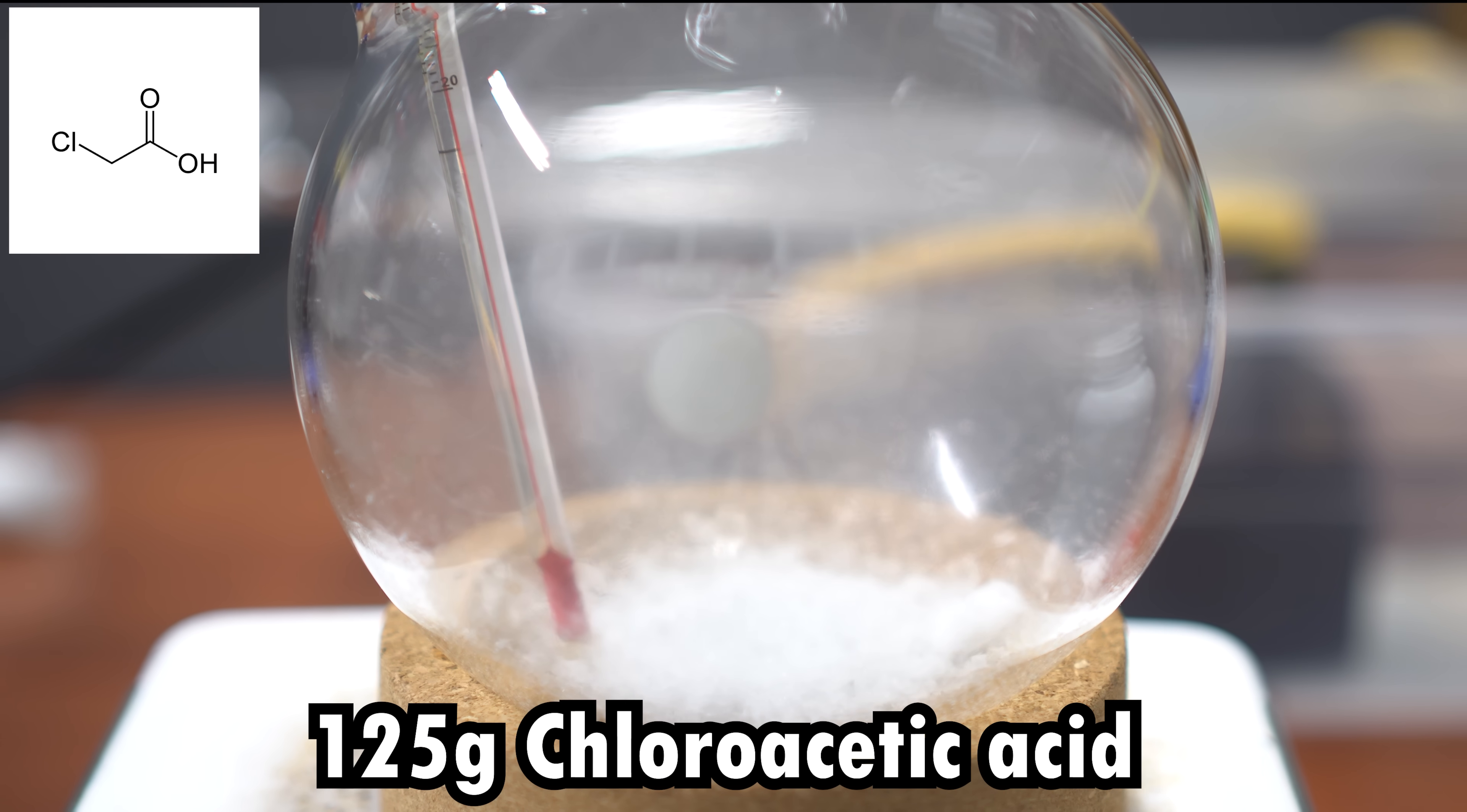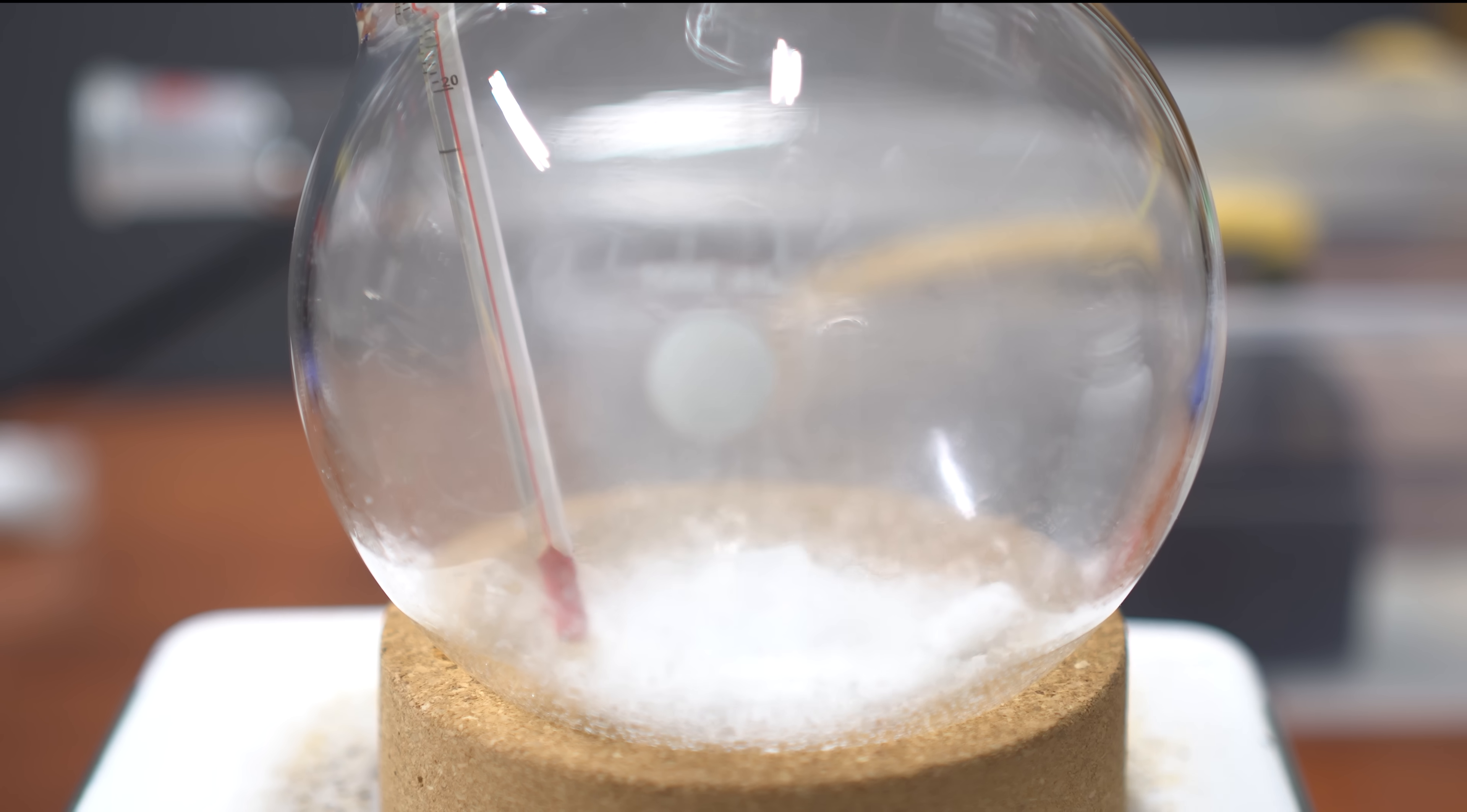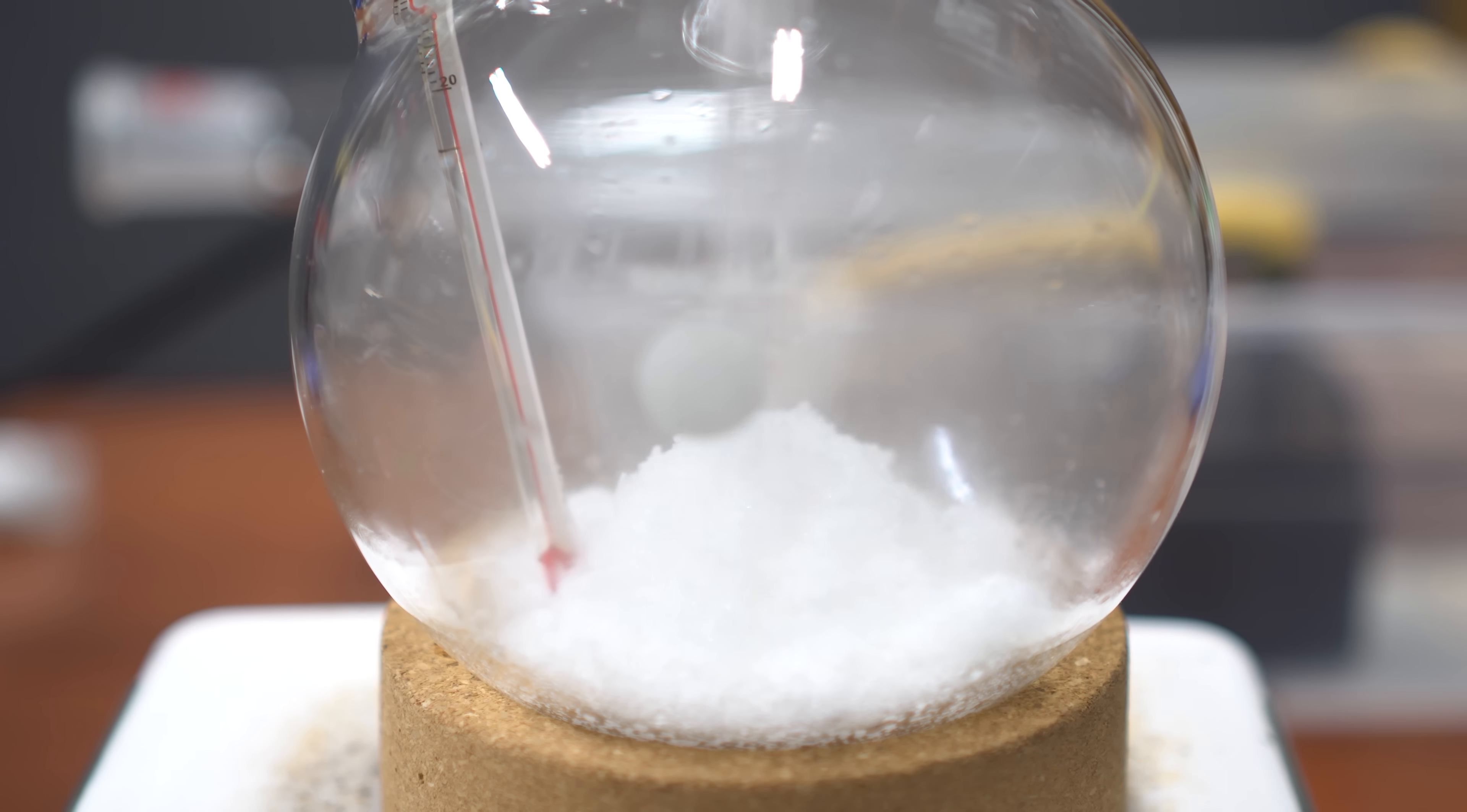To start, we're going to add 125 grams of chloral acetic acid. Mine did smoke a little, just because I had a little bit of water from cleaning it earlier. I used a 1 liter flask, and I had a thermometer adapter on one of the sides to monitor the temperature.